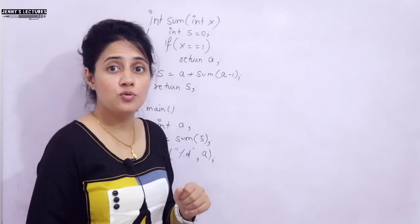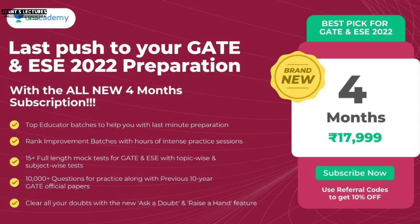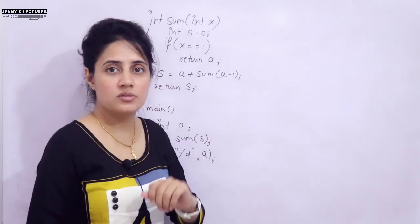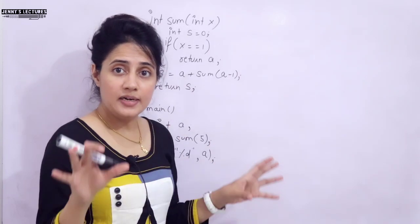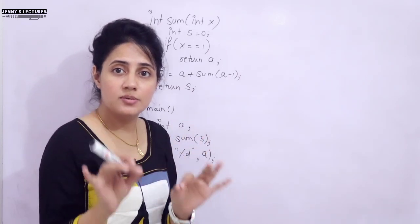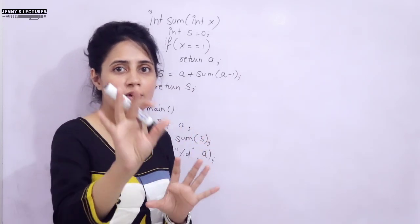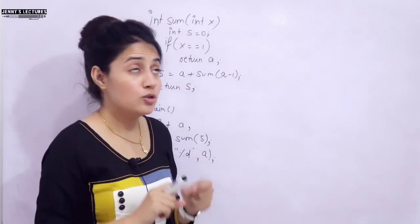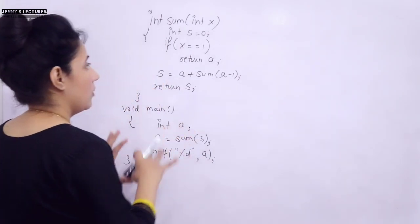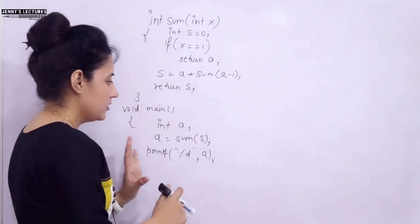There is also a four-month subscription available for GATE and ESC 2022 aspirants. You can see the details on screen — it's the best pick for you. If you use my code JKL10 you will get an extra 10% discount on this subscription. All relevant links and details are in the description box. If you're interested, go and check it out. Now let's see how to solve this problem.